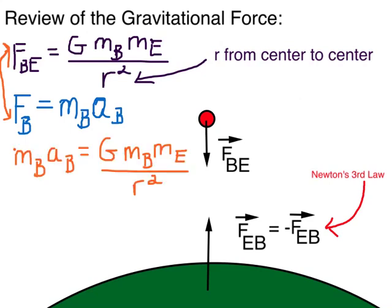we can set these two expressions equal to each other. Note the mass of the ball cancels out, leaving us an expression for the acceleration of the ball that depends only upon a constant, big G, the mass of the Earth, and the distance between the ball and the center of the Earth.